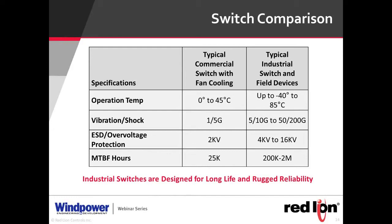A typical commercial switch has an operating temperature in the 0 to 45 degrees centigrade range, whereas a typical industrial switch can handle minus 40 to 85 degrees C. For shock and vibration, a commercial switch is rated at 1 to 5 G's, while a typical industrial switch can handle 5 to 10 G vibration and shock up to 50 to 200 G levels. It's like putting a switch in a paint shaker — industrial switches are designed to withstand that wide variance in vibration and shock.